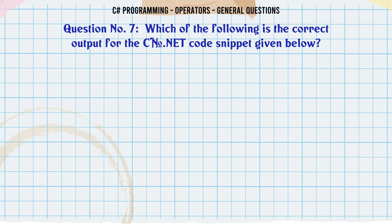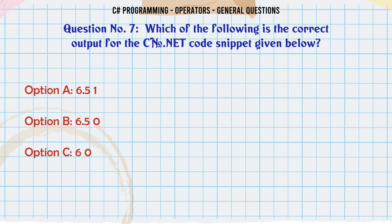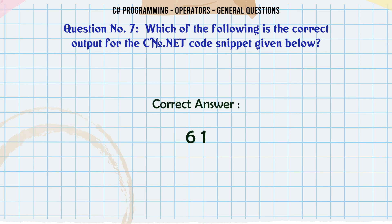Which of the following is the correct output for the C.NET code snippet given below? A: 6.5, 1. B: 6.5, 0. C: 6, 0. D: 6, 1. The correct answer is 6, 1.